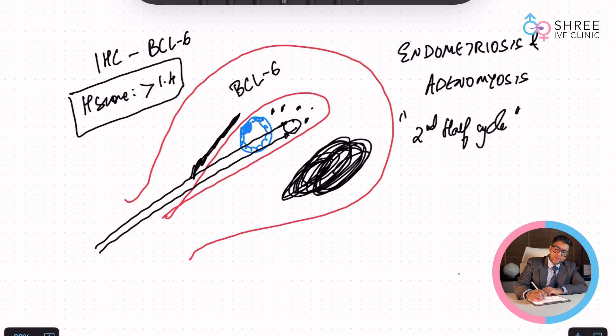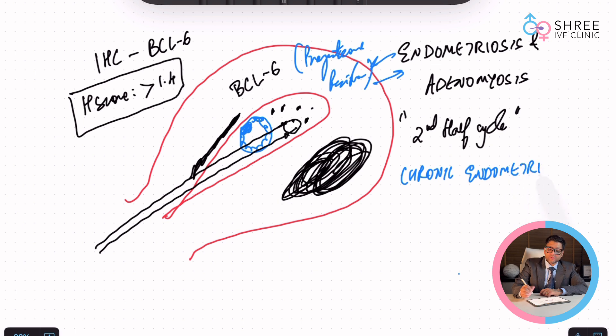BCL-6 is going to be chronically elevated whenever the body is having something called a progesterone resistance pathway. This pathway is highly active in endometriosis and adenomyosis, and it is also active when a patient is having chronic endometritis. All of them are very big contributors to patients who have had recurrent abortions and recurrent implantation failures. That is why when you have more than three abortions or more than two IVF cycles failed, for God's sake...